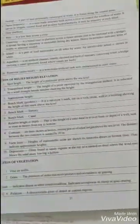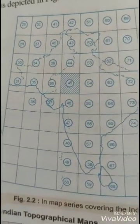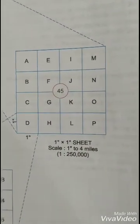In our syllabus, we have to study two sheets only. Let me take you to the map of India once again. As you can see, this is the map of India divided into different grids. In these, grid 45 is highlighted as it is the part of our syllabus. This grid is further divided into 16 more grids. Grid 45 is divided into 16 grids named A, B, C, D up to P.